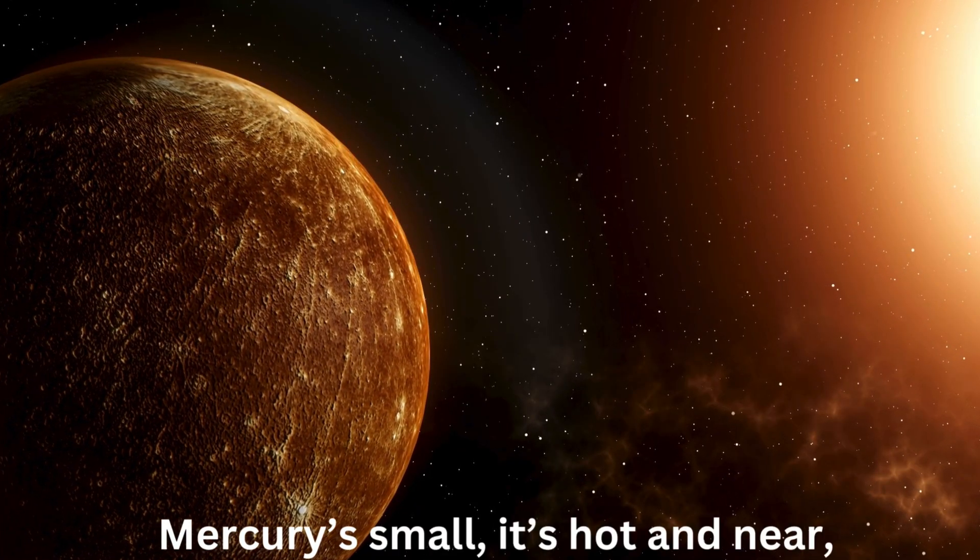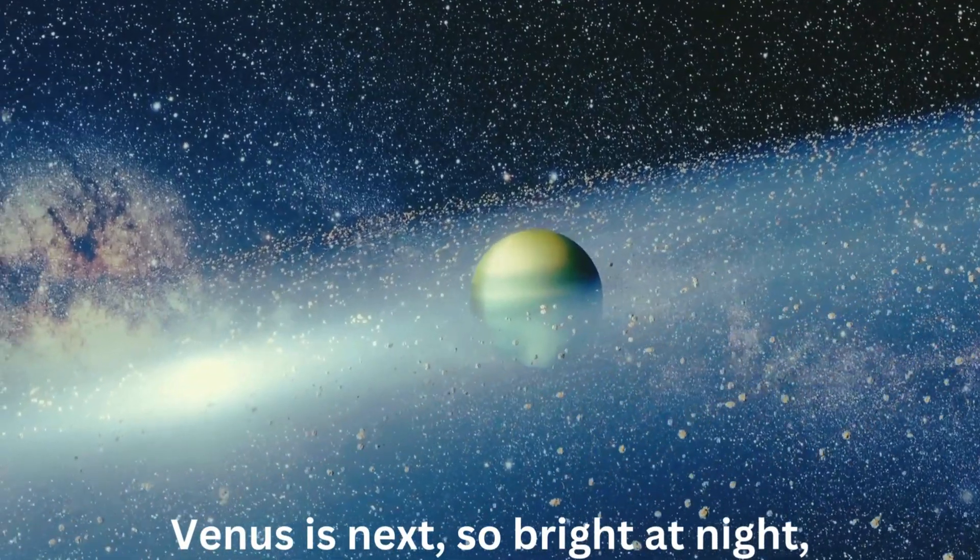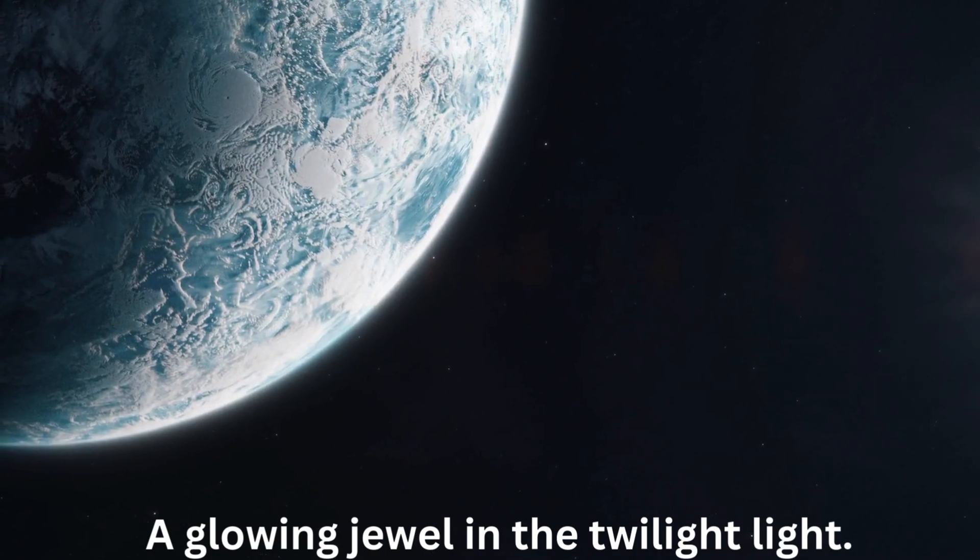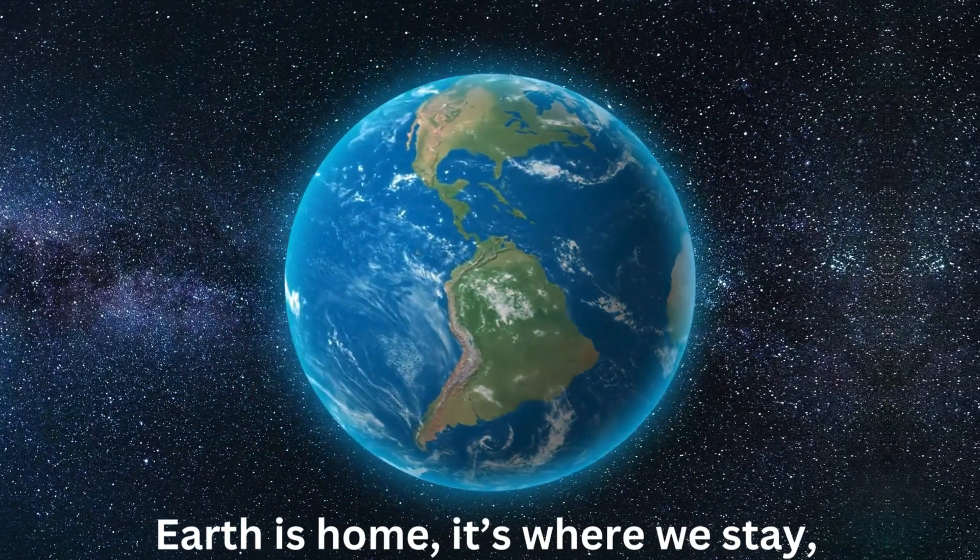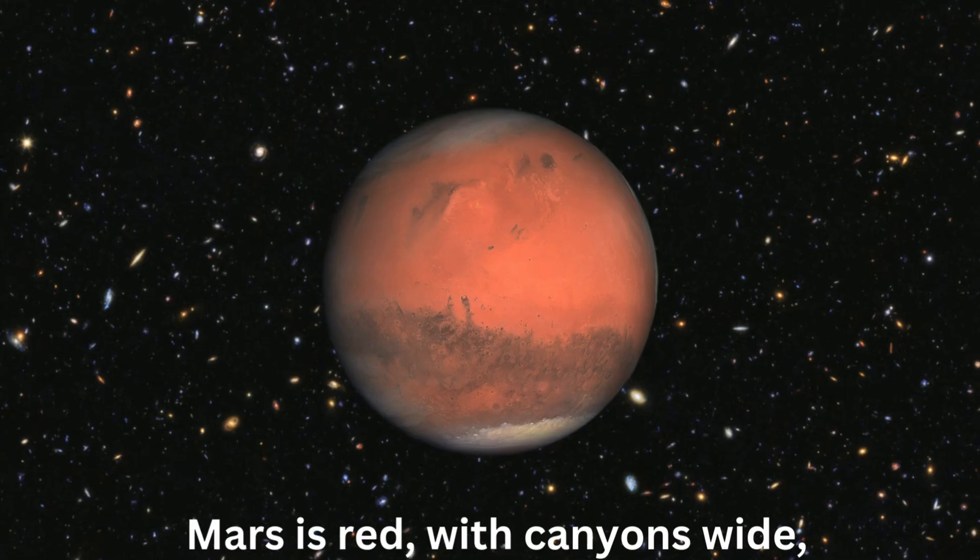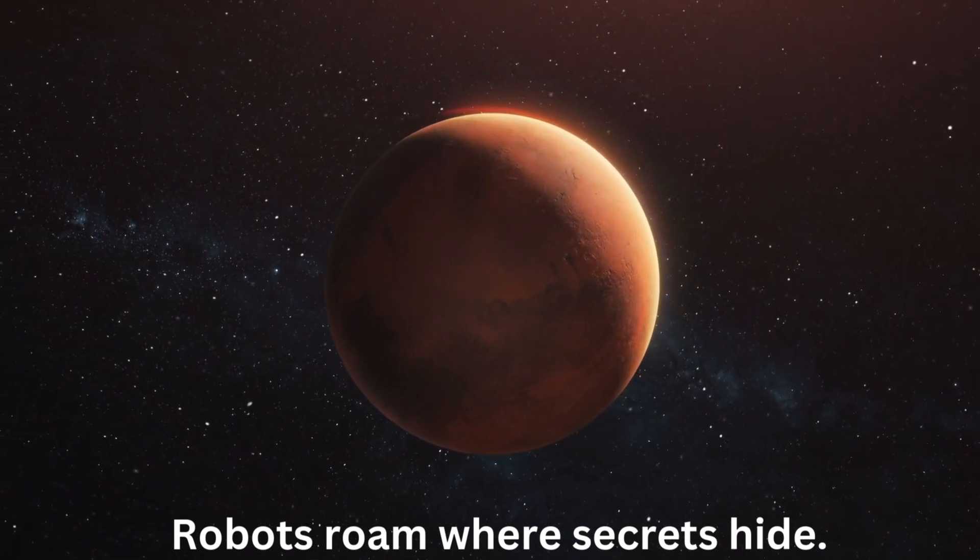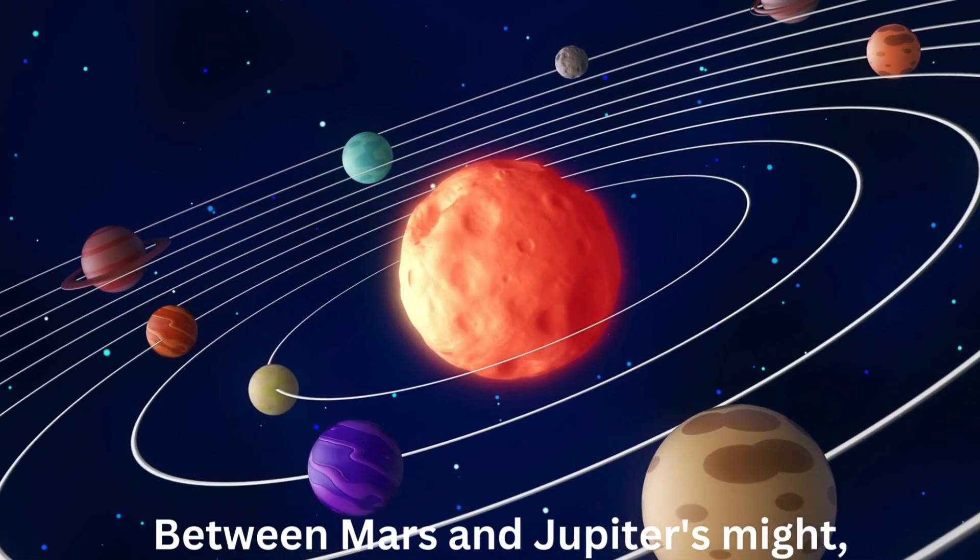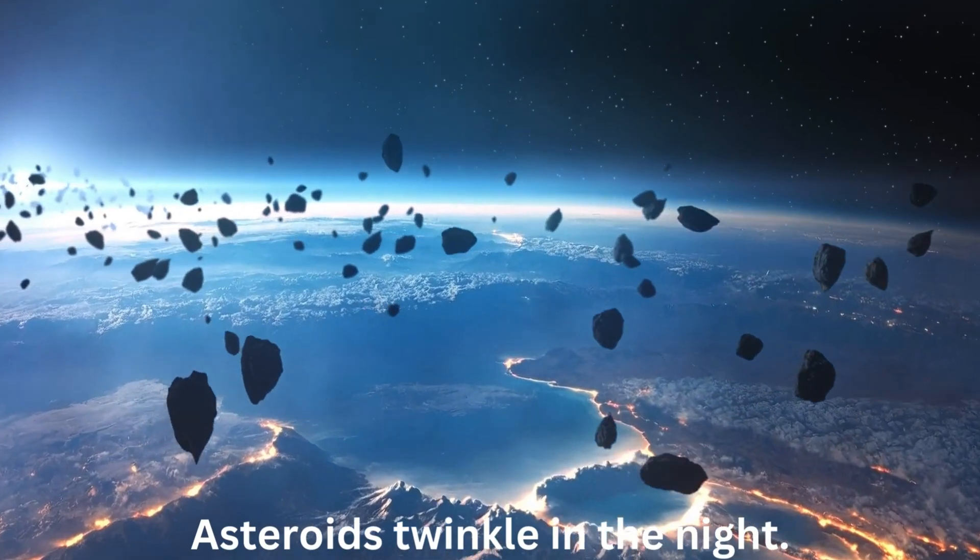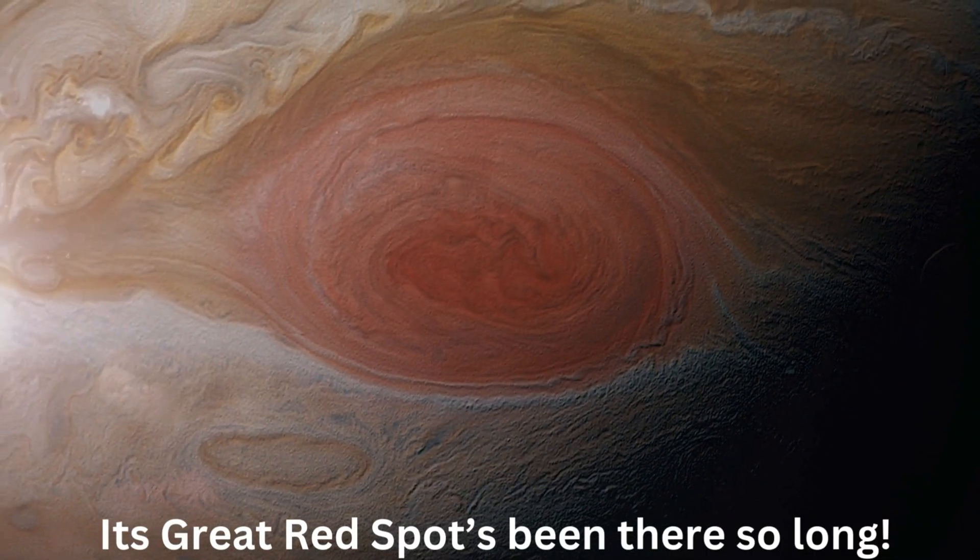Mercury's small, it's hot and near, fastest planet, zooming clear. Then Venus is next, so bright at night, a glowing jewel in the twilight light. Earth is home, it's where we stay, blue and green, we're here to play. Mars is red with canyons wide, robots roam where secrets hide. Between Mars and Jupiter's might, asteroids twinkle in the night. Jupiter's huge, with storms so strong. Its great red spot's been there so long.